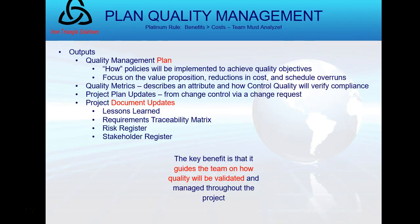The output of Plan Quality Management is the Quality Management Plan. This output will become an input to subsequent processes. It tells us how to implement items to achieve quality objectives, how to focus on value and reduce costs, and includes quality metrics showing what I'm going to measure. It also covers plan updates and document updates.